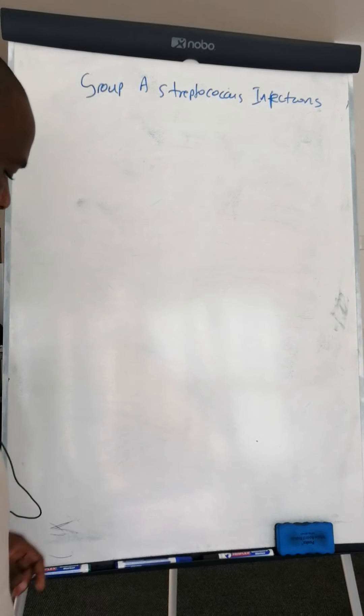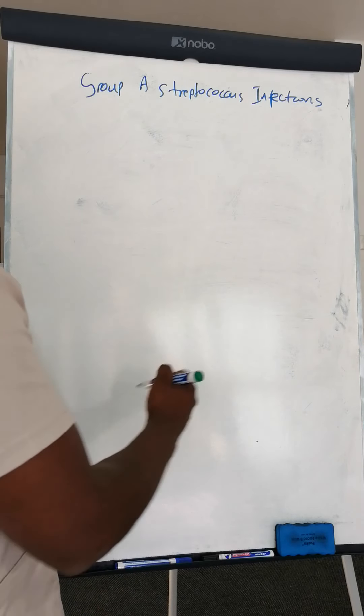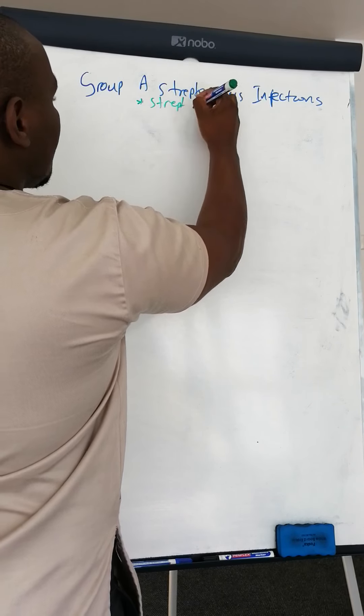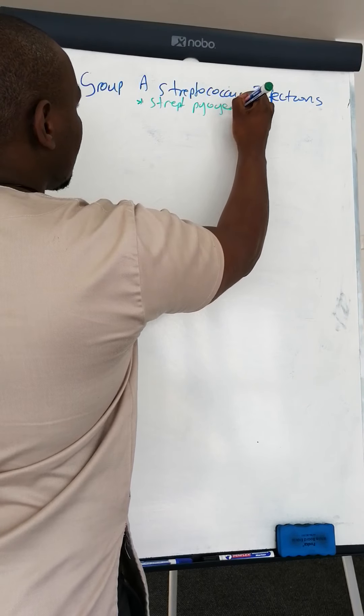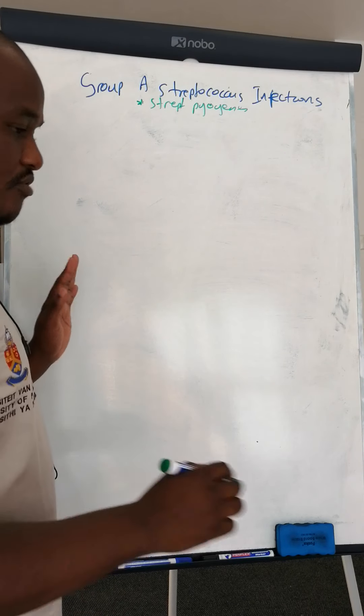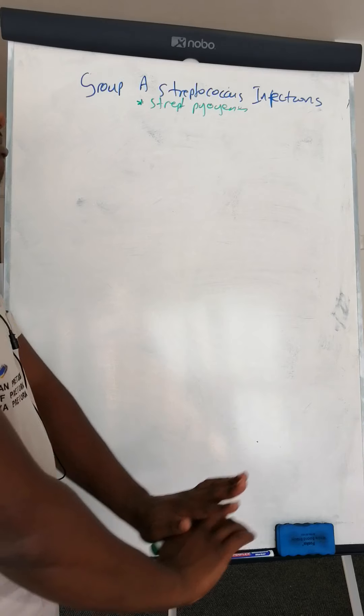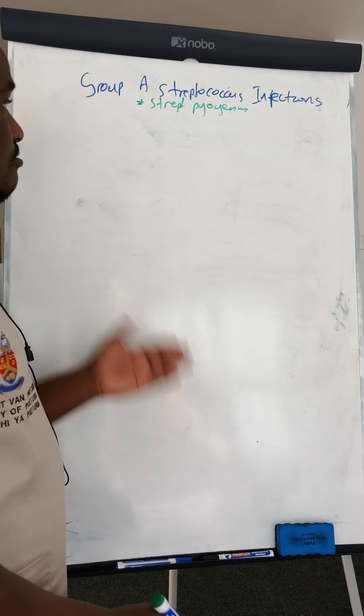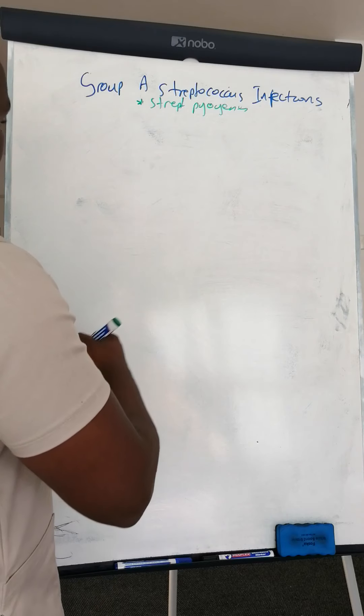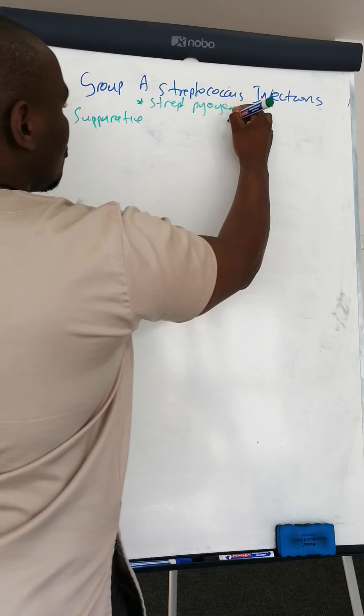Group A streptococcal infection. The main pathogen there is streptococcus pyogenes. This thing of Group A, Group B, it's purely a microbiology classification, it's a Lancefield classification which we don't really need to know. The types of infections that this bacteria causes are what they call suppurative and non-suppurative.